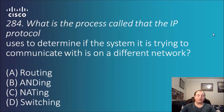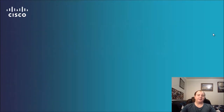Question 284: what is the process called that the IP protocol uses to determine if the system it is trying to communicate with is on a different network? Options are routing, ANDing, netting, or switching. The process in this case is B — ANDing.